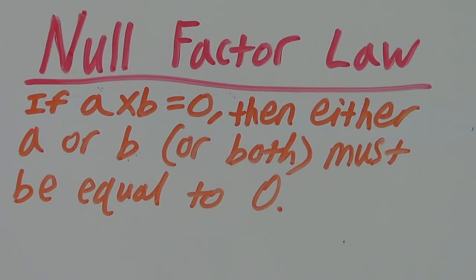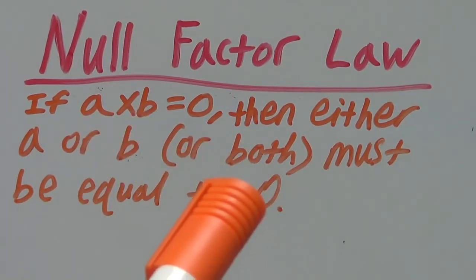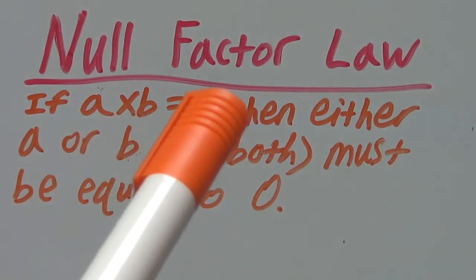This makes sense because zero times anything equals zero. If a or b equals zero, or both of them, then the answer will equal zero.